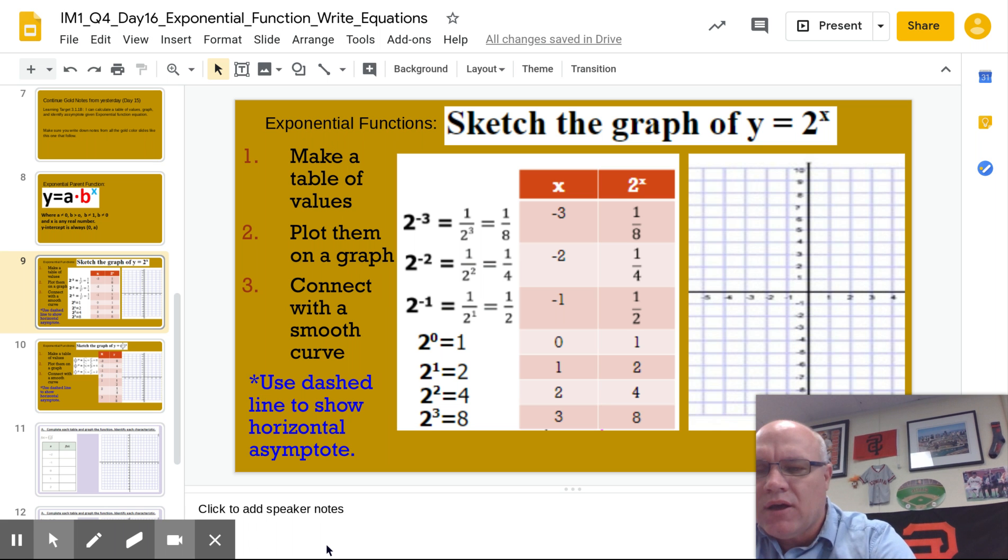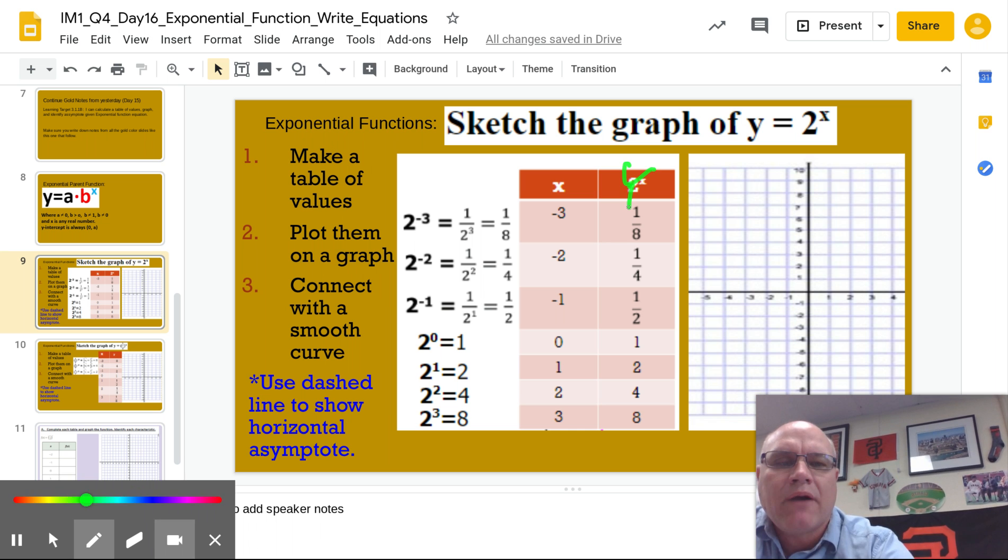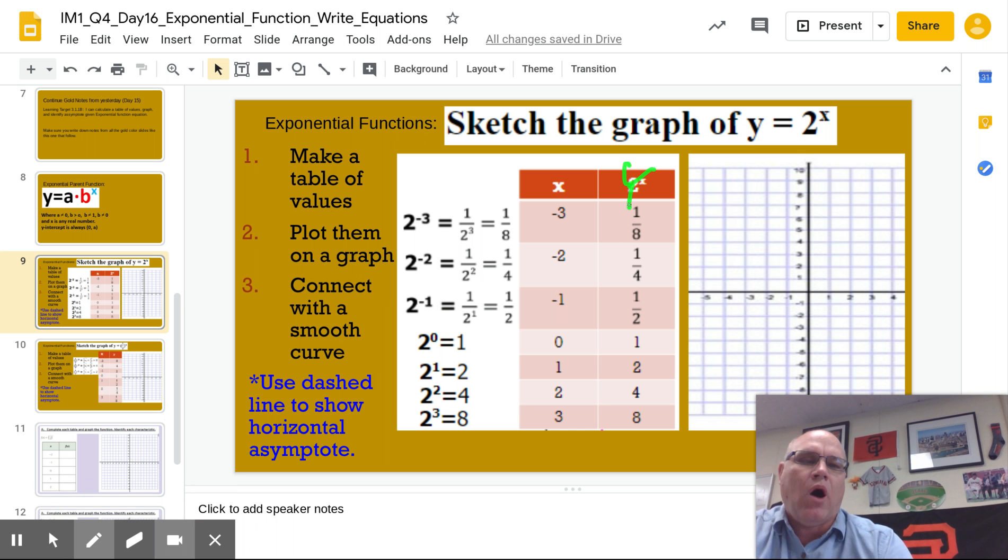So we have our table. This is going to be x and y. We substitute negative 3 for x, you get 1/8. Substitute negative 2 for x, you get 1/4. Substitute negative 1 for x, you get 1/2, and so on.